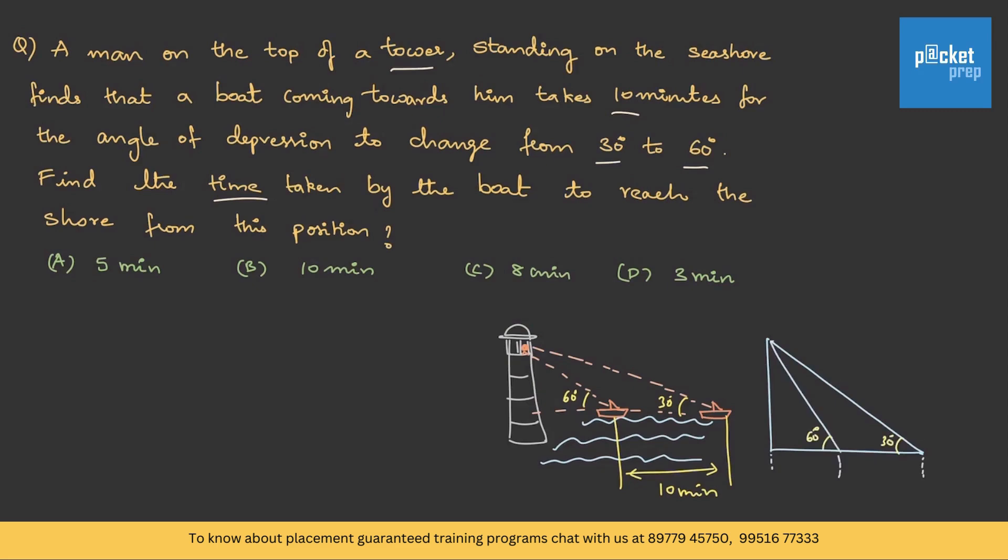Here is the triangle. Initially it was 30, then it became 60 degrees. Time lapse was 10 minutes. But nowhere he mentioned about the heights and distances. Let me write it. Let's assume the height of the tower to be h. Initially, it might have traveled some x distance, then some y distance before it reached the tower.